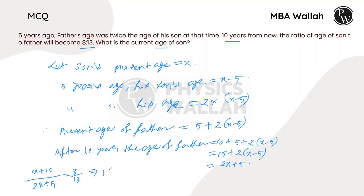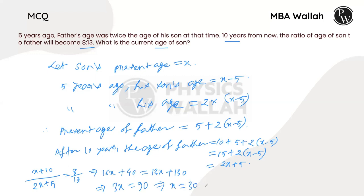Therefore, cross-multiplying, we get 13(x+10) = 8(2x+5), giving us 13x plus 130 equals 16x plus 40. Simplifying, 3x equals 90, and further reducing, x equals 30. Therefore, the present age of son is 30.